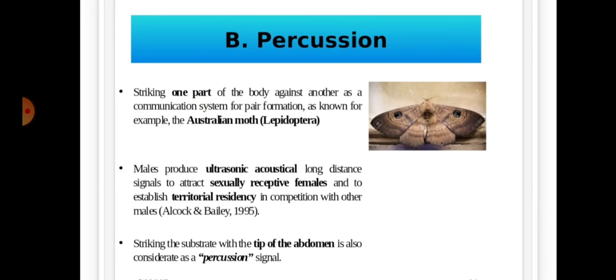Next, percussion. Striking one part of the body against another as a communication system for pair formation is known, for example, in Australian moths. Males produce ultrasonic acoustic long-distance signals to attract sexually receptive females and to establish territorial residency in competition with other males. Striking the substrate with the tip of abdomen is also considered a percussion signal.